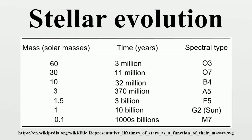Stellar evolution is the process by which a star changes during its lifetime. Depending on the mass of the star, this lifetime ranges from a few million years for the most massive to trillions of years for the least massive, which is considerably longer than the age of the universe. The table shows the lifetimes of stars as a function of their masses.